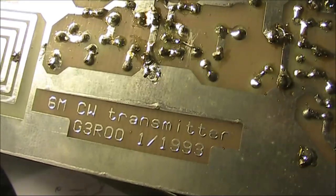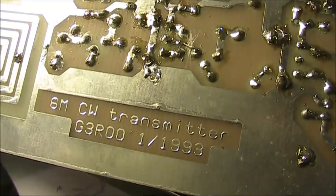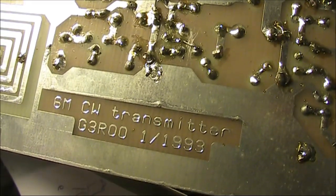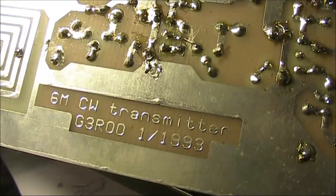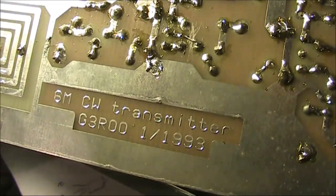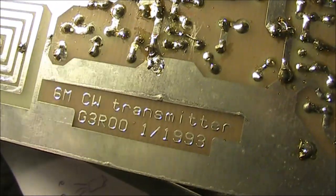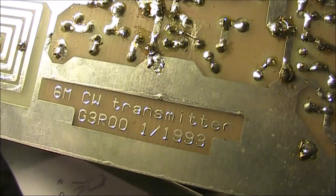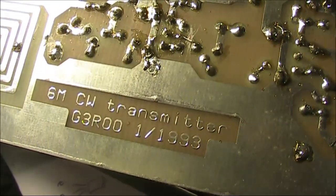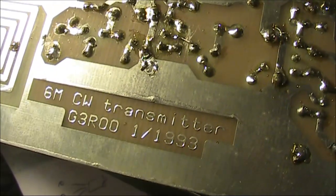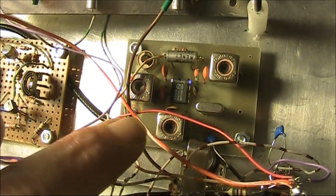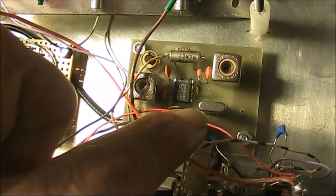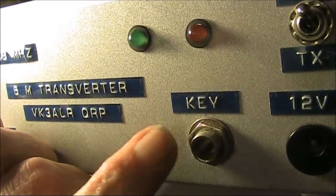All has now been revealed. It's not a full transverter at all. Instead, it is a 6 meter CW transmitter, designed by G3R00, who is well known in the GQRP club, 1993. So, the idea is that you would have your transmitter on CW, and then it's been put in the same box as the receiving converter. And this crystal almost certainly is 22 megahertz. That also explains the key socket here.